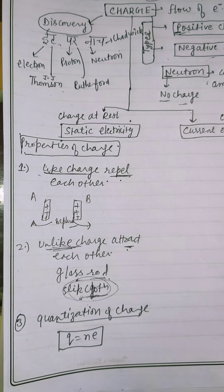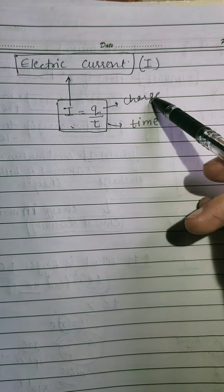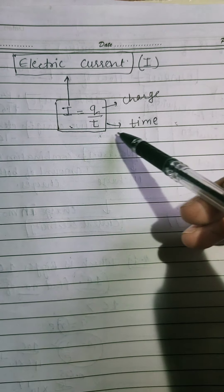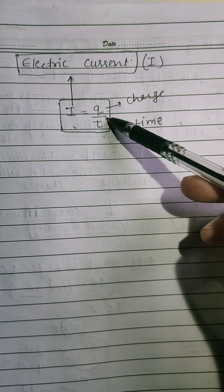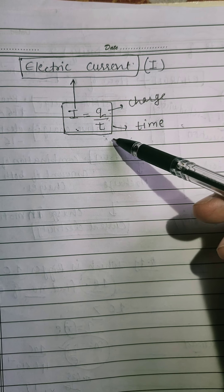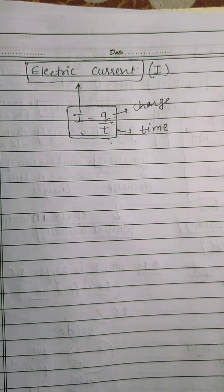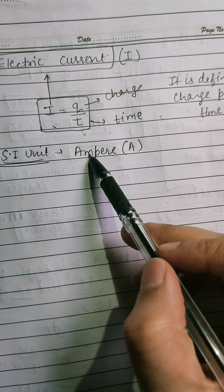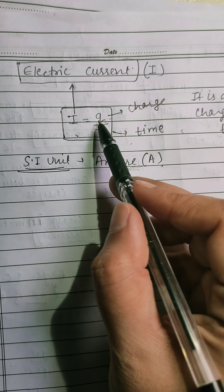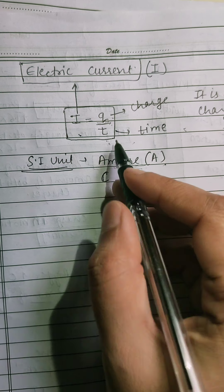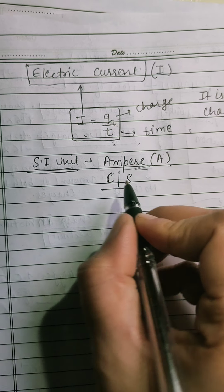Current is denoted by I. And the formula for current is I equals to Q upon T. Here, I is current and Q is charge and T for the time. From the formula, we define the term. Current is defined as charge per unit time. Flow of charge per second. That is current. SI unit of current is ampere, which is denoted by capital A. And the derived unit of current is for charge, we use coulomb. And for time, we use second coulomb per second. This is derived unit.